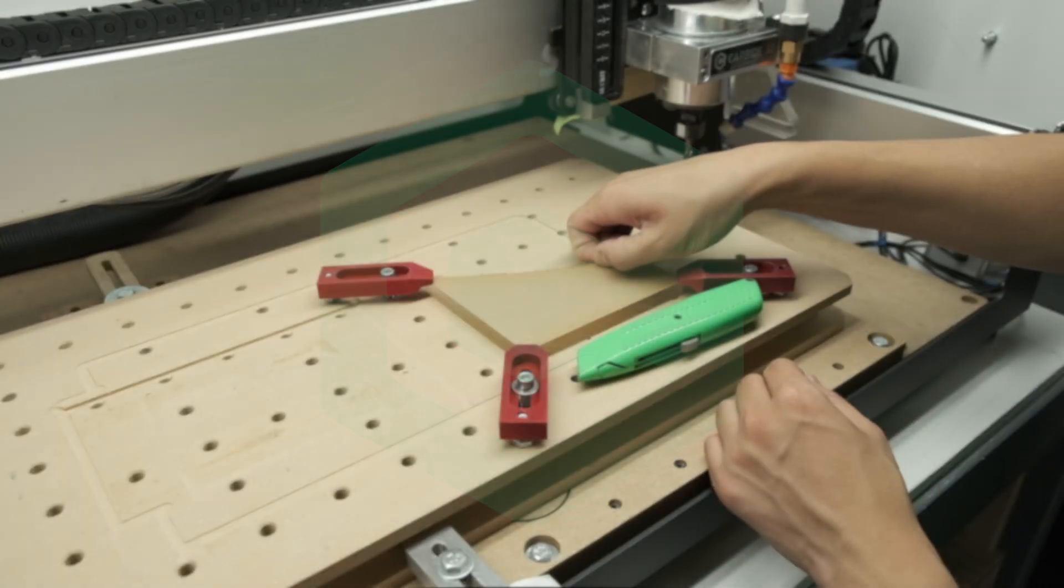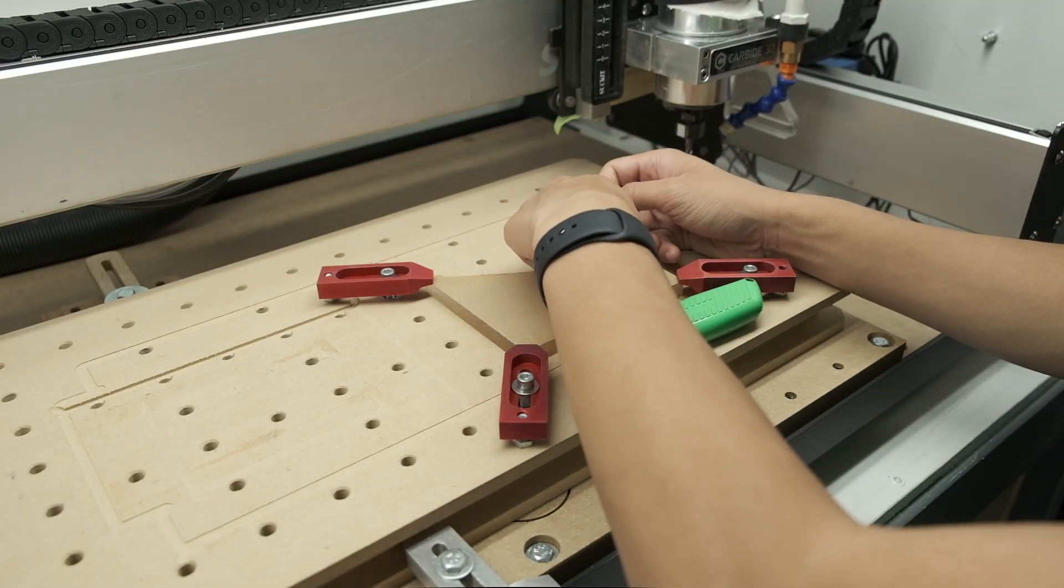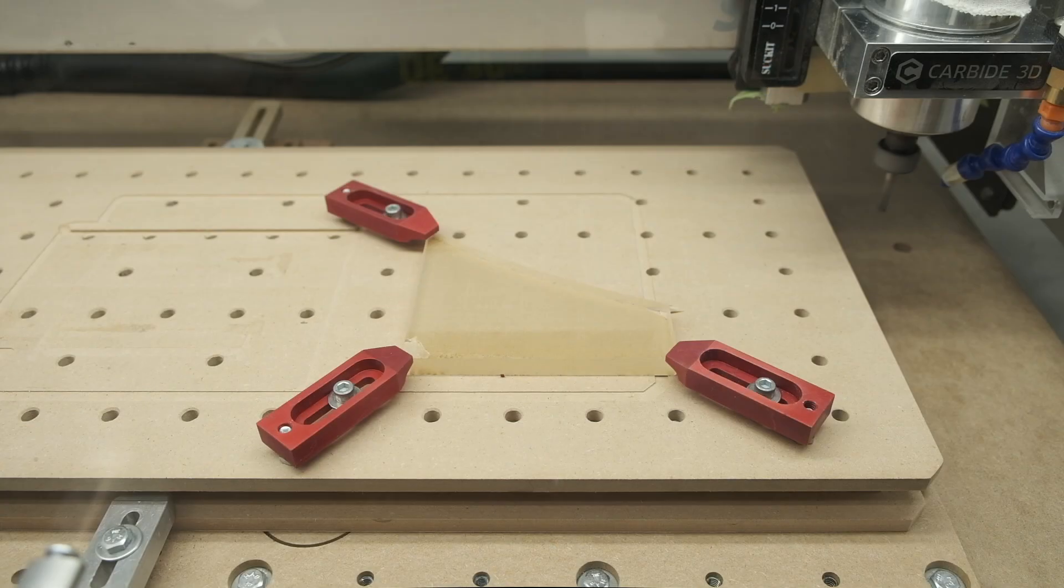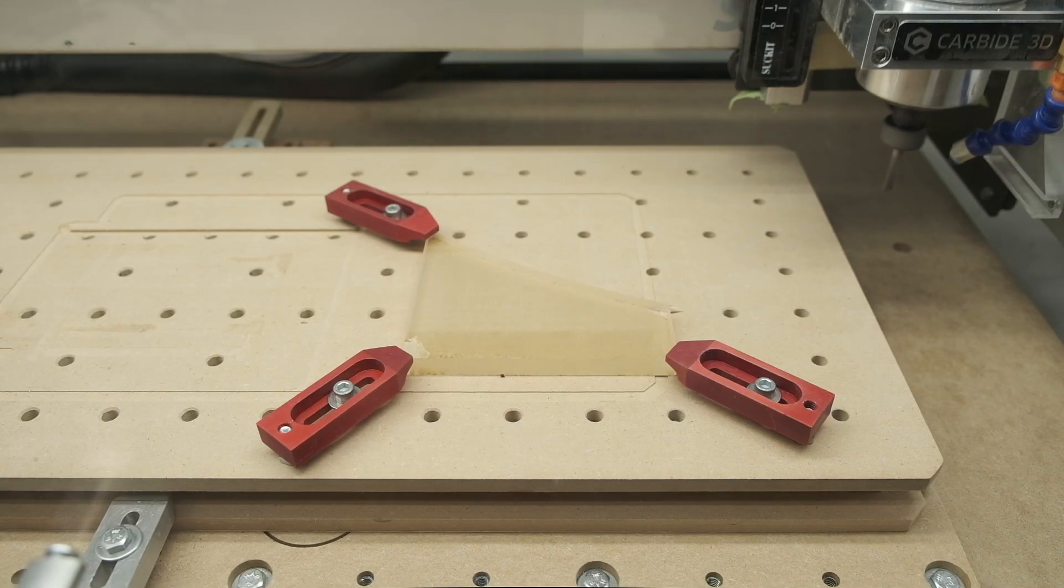Hey guys, Winston at Carbide3D here. Acrylic is a pretty common plastic that people machine, and since I've already done a video about it in reference to the Nomad, I think it's only fair I do the same for the Shapeoko.